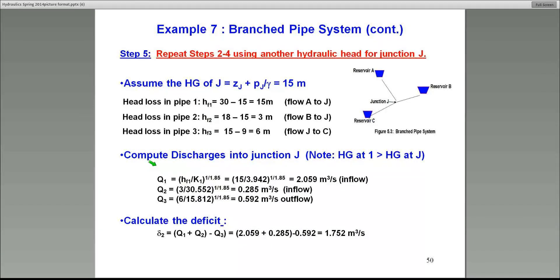In this case, you repeat all the steps we just did for another hydraulic head at junction J. In this case, let's say 15 meters. If you do 15 meters, head loss in pipe number 1 will be essentially repeating the same steps, 30 minus 15, and that will give 15 meters head loss. Once again, assuming this at 15 meters, the hydraulic head at the junction, remember reservoir B is at 18.